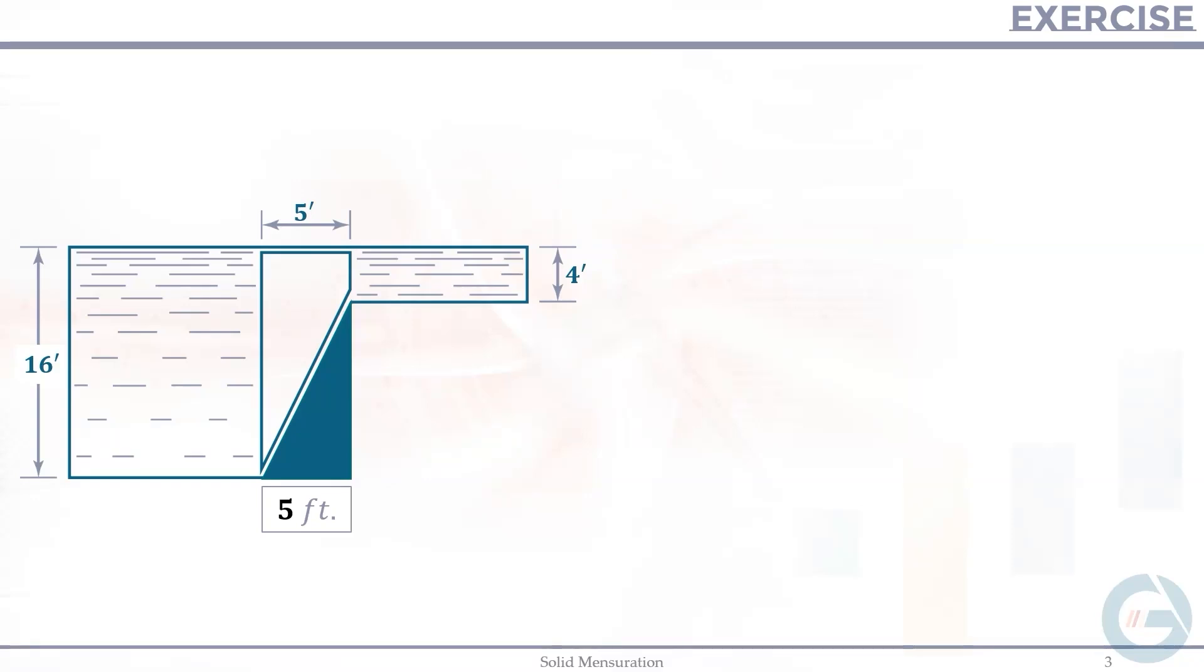The second value is, if this length is 16, and this is 4, so 16 minus 4 is 12 feet. So again, let's check. This is 12 plus 4, so total is 16.